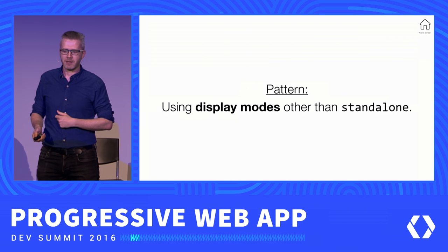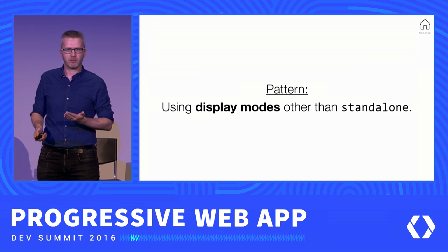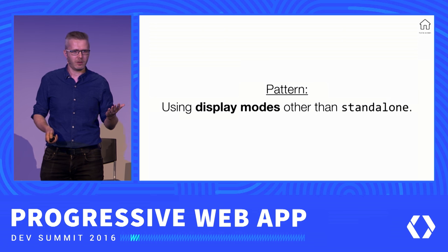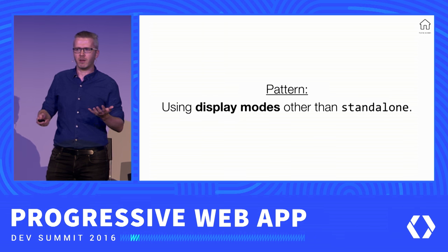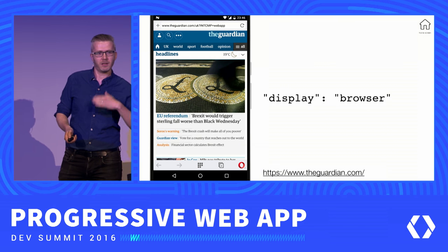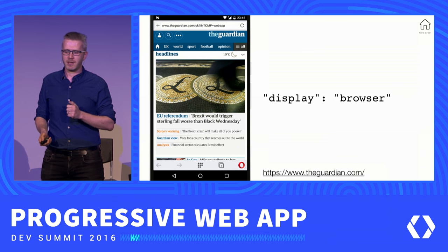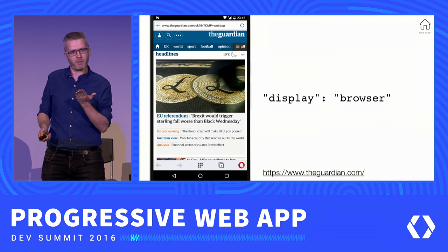Another pattern I want to look at: more and more progressive web apps are using display modes other than the standalone display mode. I recently was browsing the Guardian and an install banner popped up. When I launched it, I noticed they're using display browser, which pops the site back up into the browser so it doesn't go standalone or full screen. You can still use the URLs as a navigation aid or for sharing — which is quite important for a newspaper that wants to build social media engagement around its content.